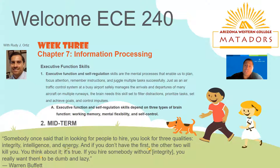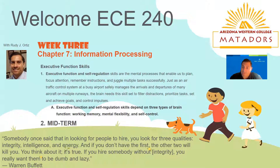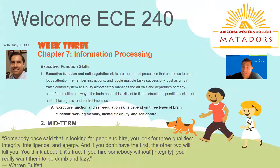Executive function can be broken down into three parts. These three parts are working memory, mental flexibility, and self-control. Make sure you understand that all three of these must work together, and all three are under the umbrella of executive function skills.